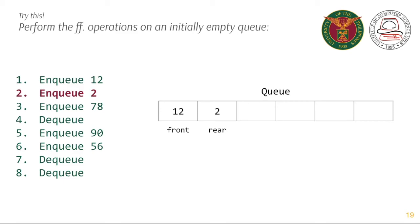Next operation enqueue 2. Front is 12, rear is 2. Enqueue 78 and then dequeue. 12 was removed from the queue. The new front is 2. 78 is still the rear of the queue.